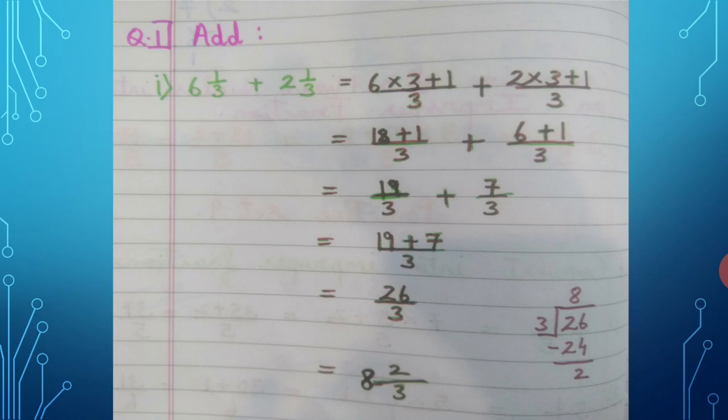Divide 26 by 3 in the rough: quotient is 8, remainder is 2, and divisor is 3. So the final answer is 8 and 2 upon 3.